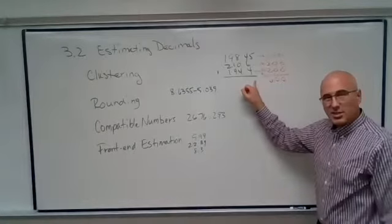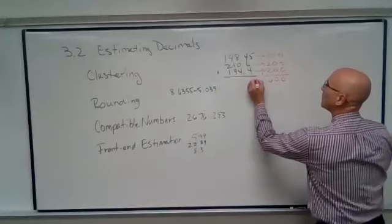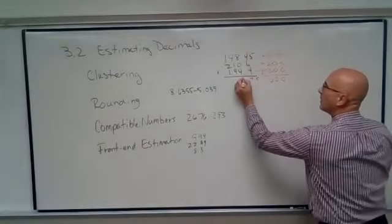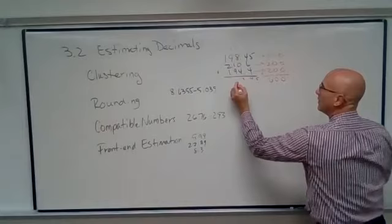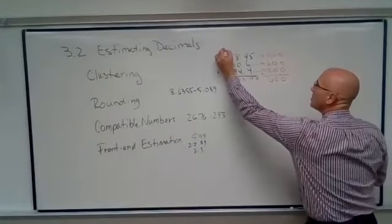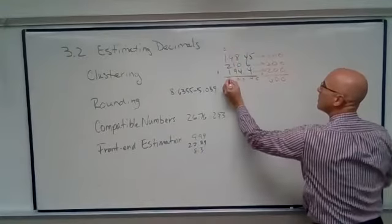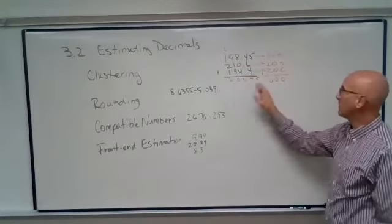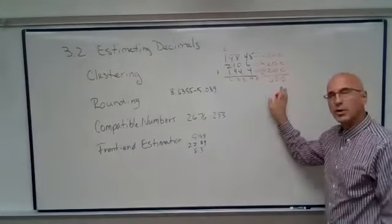So if we actually did the addition for here, just so that you can see how close we are, we get 603 and 45 hundredths. So our estimate was pretty close.